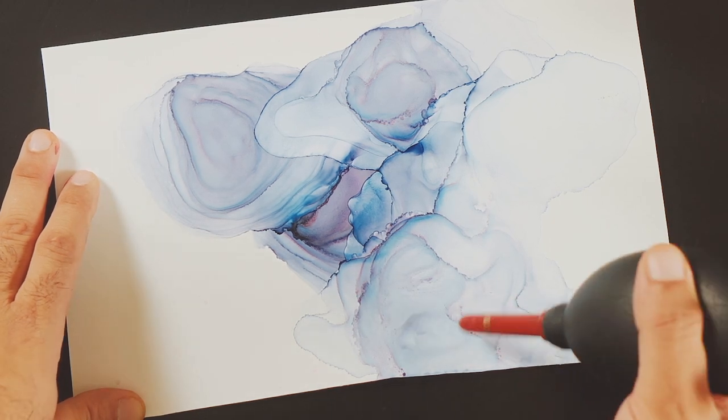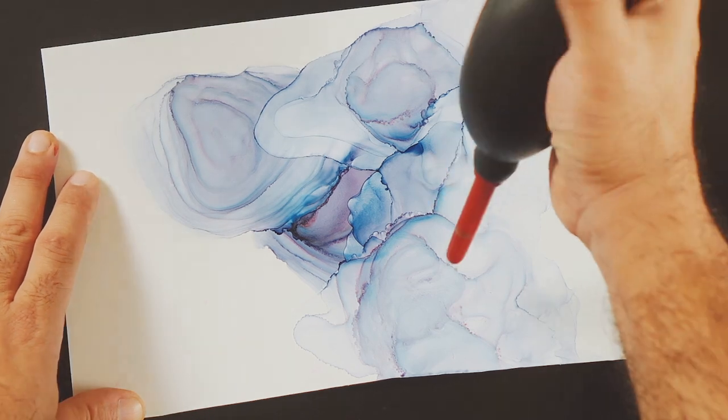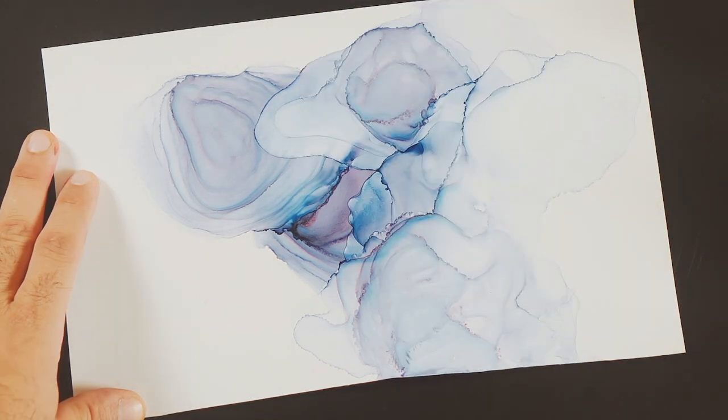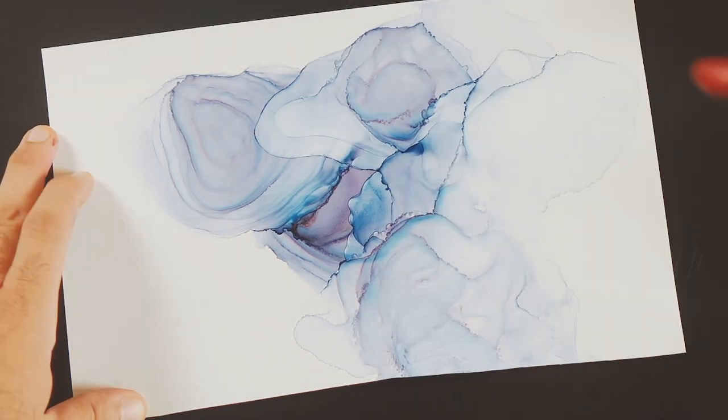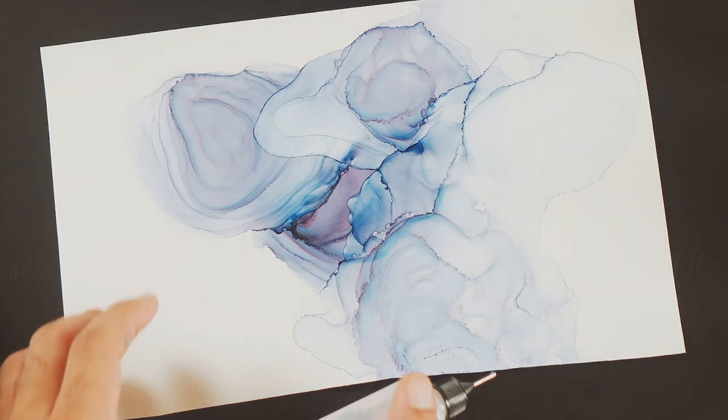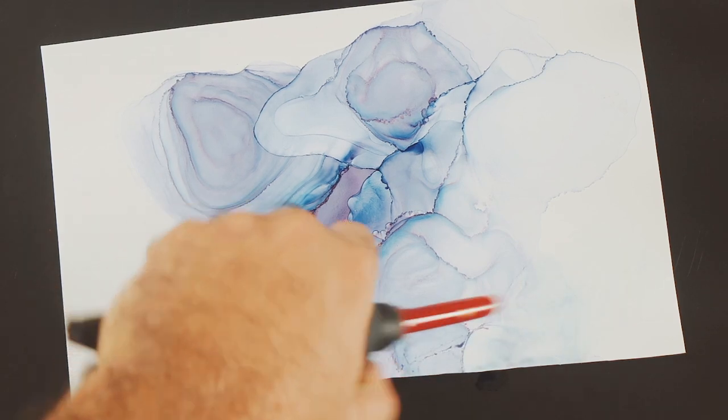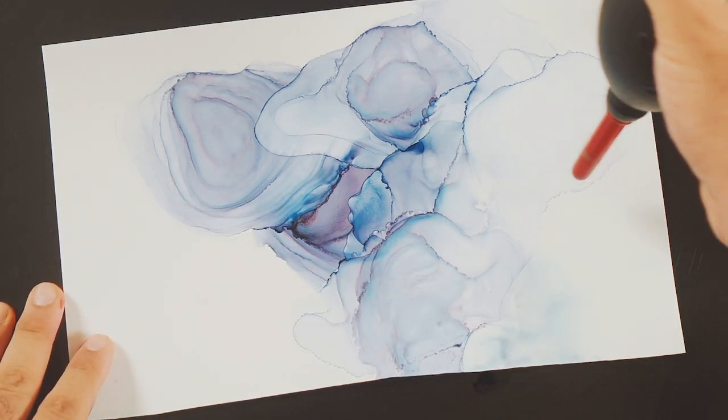Same thing here, you see that line? Okay. So now if I want to soften this area up, push the ink out, away from it, and bring it in.